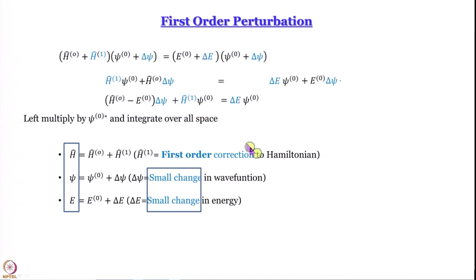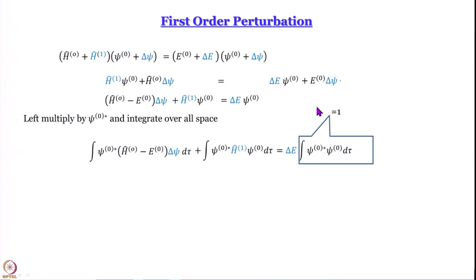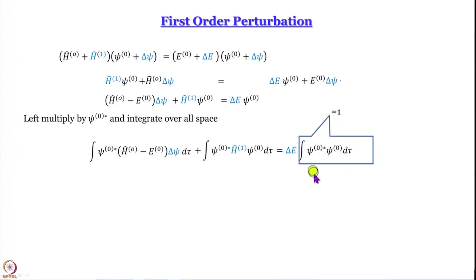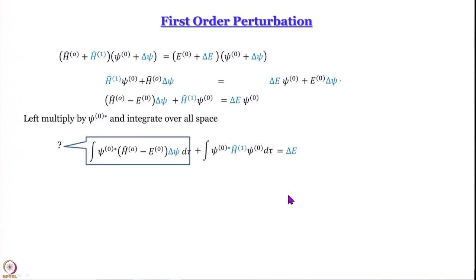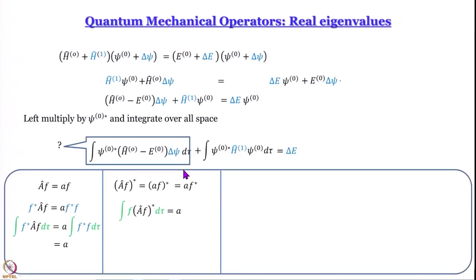Left-multiplying by psi 0th star and integrating over all space gives us an expression. On the right-hand side we get delta E multiplied by the integral of the 0th order wave function and its complex conjugate, which equals 1. So the right-hand side simplifies to just delta E. On the left-hand side, we now need to evaluate the remaining integral.